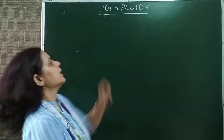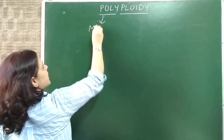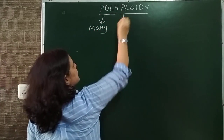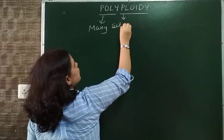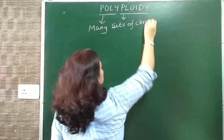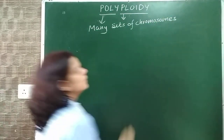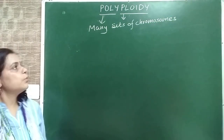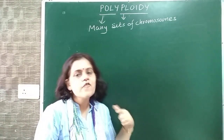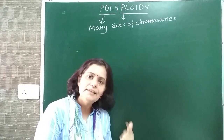Polyploidy - the word meaning: poly means many and ploidy means sets of chromosomes. Polyploidy is a phenomenon that means the occurrence of many sets of chromosomes in a cell.